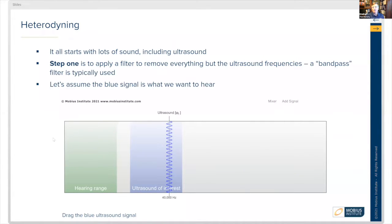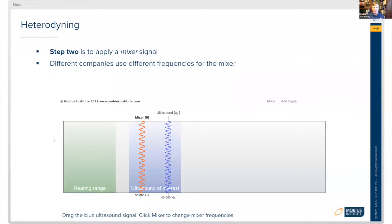The second step is that the technology applies what's called a mixer signal. Different companies use different mixer signals, different frequencies for that mixer signal. And you see on this diagram, the mixer is represented by the Greek symbol theta, and ultrasound is represented by phi. And so, the mixer is at 30,000 hertz, and the ultrasound frequency is at 40,000 hertz.